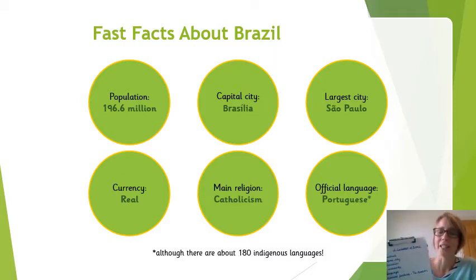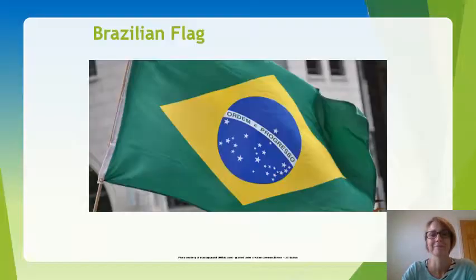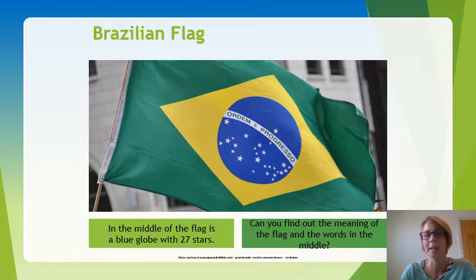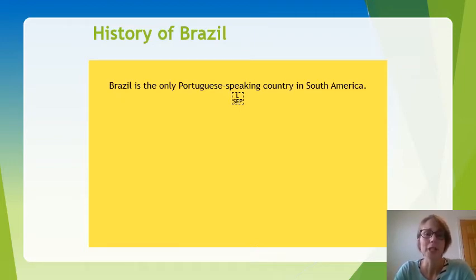Here is a picture of the Brazilian flag. In the middle of the flag is a blue globe with 27 stars. It might be good to find out the meaning of the flag and the words in the middle: 'Ordem e Progresso.' Brazil is the only Portuguese-speaking country in South America, and there's a reason for that.